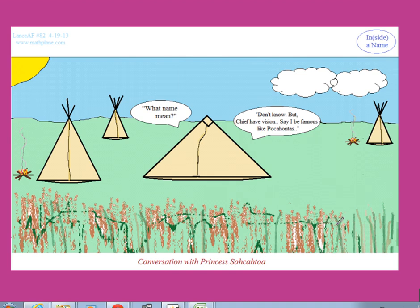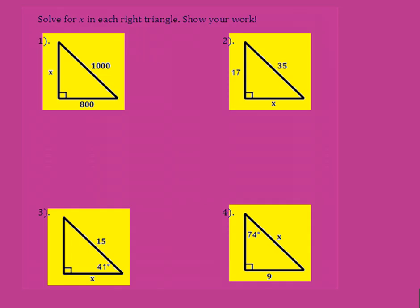Alright, we are beginning our review on SOH-CAH-TOA and right triangle trigonometry. Princess SOH-CAH-TOA knows what she's talking about, so let's get right into this. In these first problems, what we need to do is — in these first two — we know two sides and we need to find the third side. This is just Pythagorean theorem.